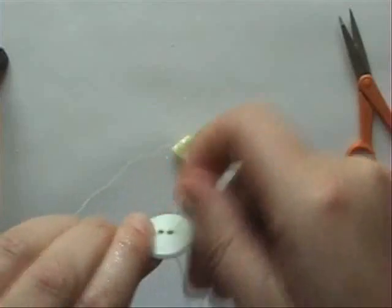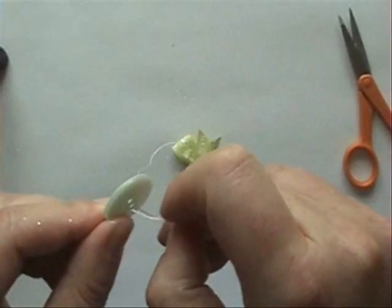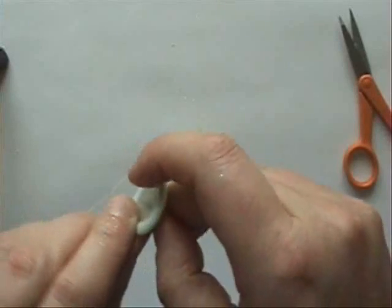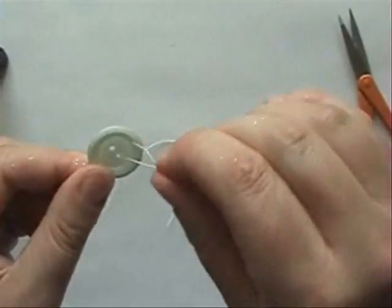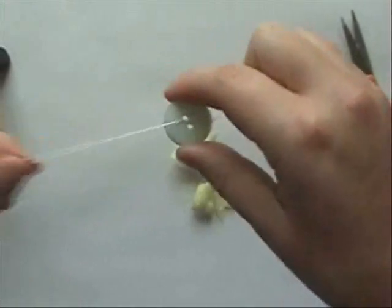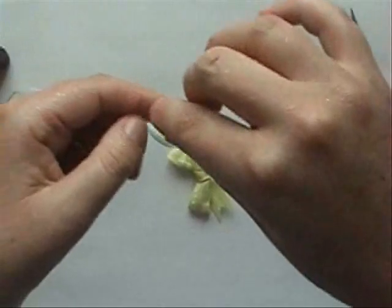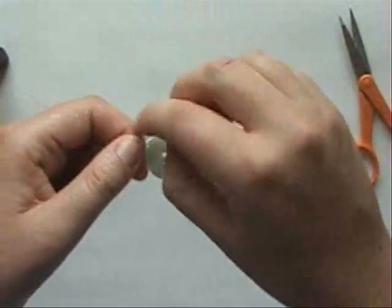I have some crochet thread which is like a single strand. And when I use it on buttons I put it through the holes twice so it has you know, it doesn't look so wimpy, so thin. Tie the back.